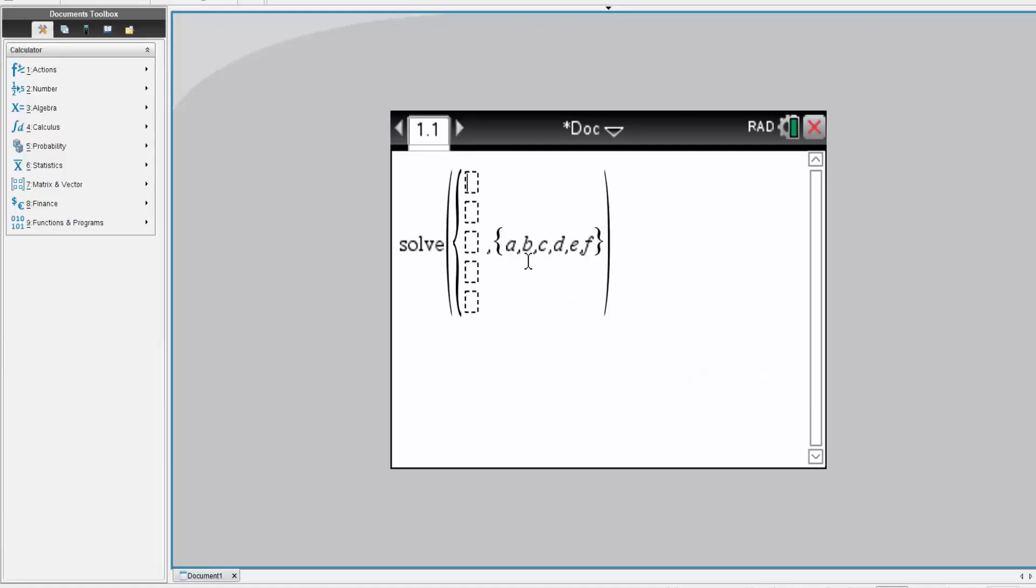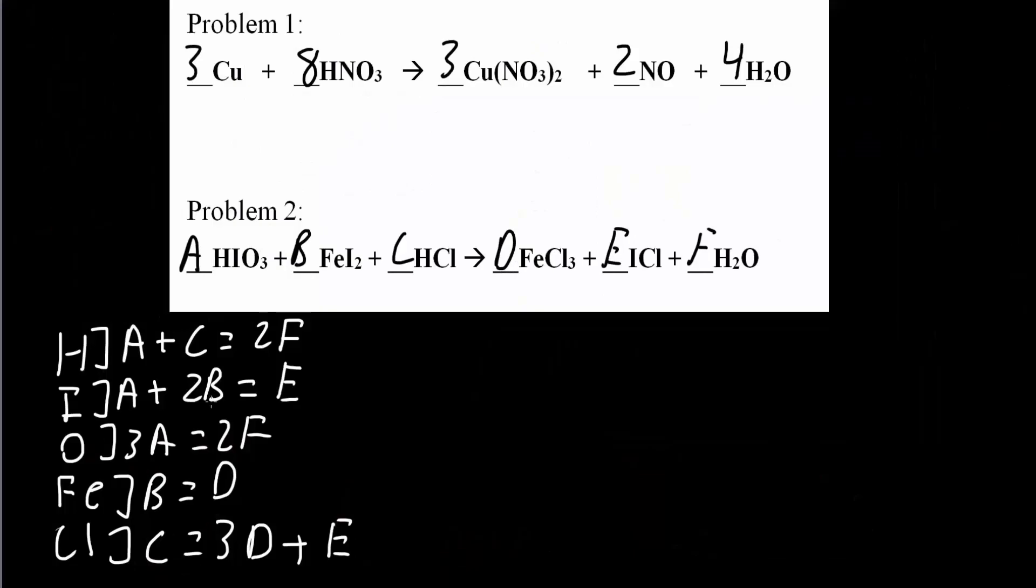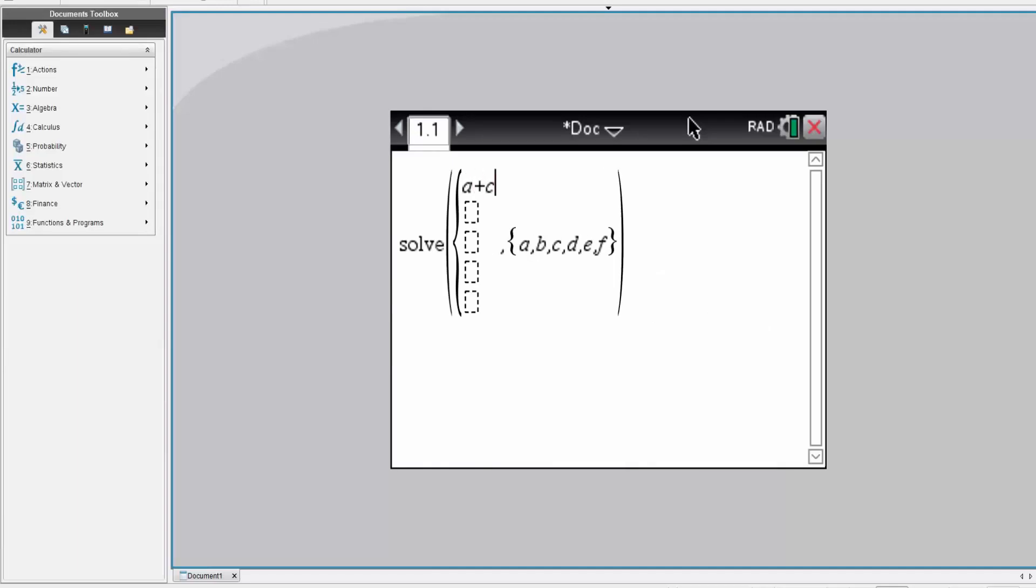Now we simply copy down the equation. Let me quickly go back. These were the equations that we're simply just copying down into the TI Inspire CX CAS. So A plus C is equal to 2F. Next, I, A plus 2B is equal to E. Next, 3 times A is equal to 2 times F. Very important that you actually put the multiplication sign here.